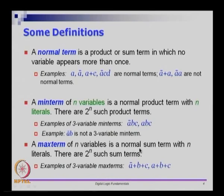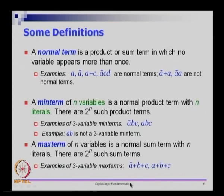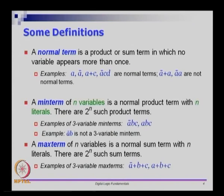A max term on n variables is a normal sum term with n literals — the same constraint applies: if it is a max term of n variables, it should have n literals. For three-variable max terms, a bar + b + c is valid: it is a sum term, no variables repeat, and all three variables appear exactly once. a + b + c is also a valid three-variable max term. However, a bar + c cannot be a valid three-variable max term because it is missing one variable, while a bar + b is a valid two-variable max term.